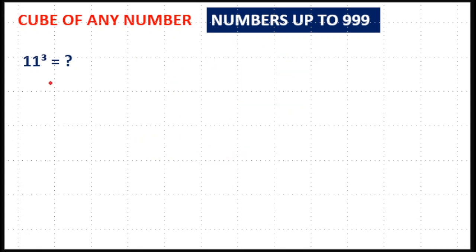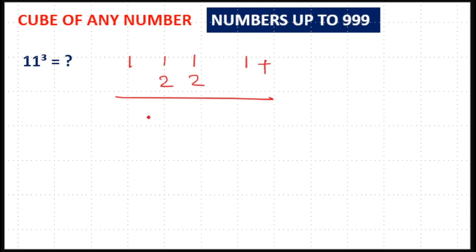Next is 11 cube. 1 cube is 1, 1 cube is 1. 1² × 1 = 1, and 1² × 1 = 1. Doubling the middle value gives 2. When you add, you get 1331 as your answer.